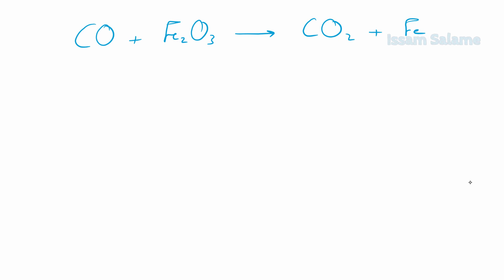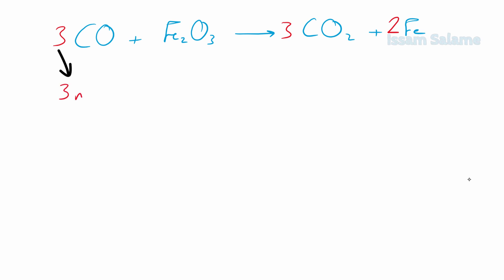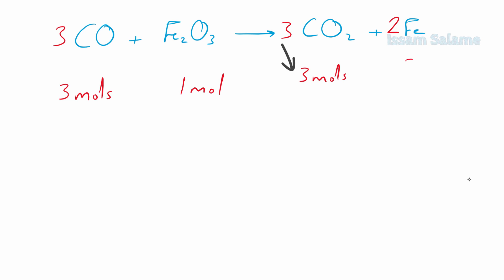We start balancing by multiplying iron by 2, then carbon monoxide and carbon dioxide by 3, and now it's balanced. It's very important to balance chemical equations since balanced chemical equations work like a recipe — they show the proportions of reactants and products. Here we have 3 moles of carbon monoxide reacting with 1 mole of iron(III) oxide to produce 3 moles of carbon dioxide and 2 moles of iron.